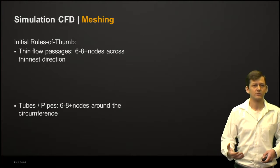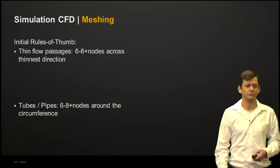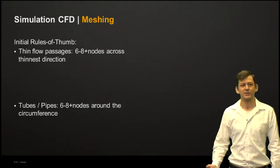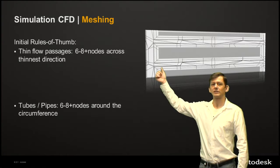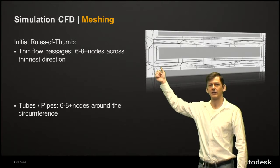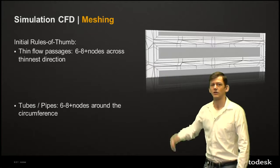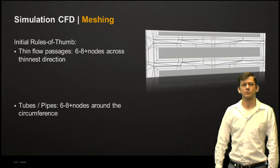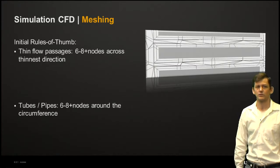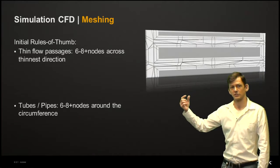Some initial rules of thumb: for thin flow passages, if we had something like this, we're not really capturing or getting the entrance effects or really that flow passage captured very well. It's not a bad starting place, but ideally we're going to want six to eight nodes across whatever the thinnest direction is.